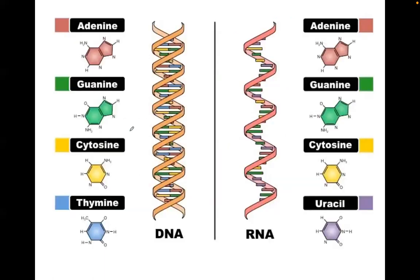DNA is double-stranded — one strand here and another strand — while RNA is single-stranded. The purine bases are adenine and guanine; the pyrimidine bases of DNA are cytosine and thymine. In single-stranded RNA, the purines remain adenine and guanine; however, thymine is replaced by uracil in the pyrimidines.